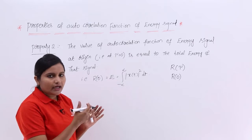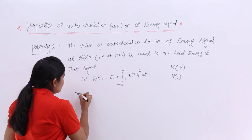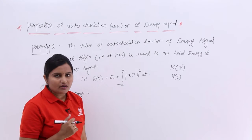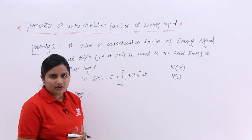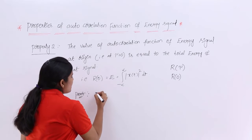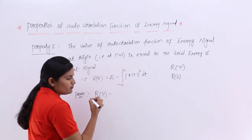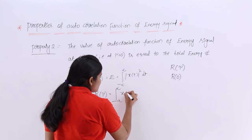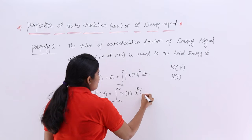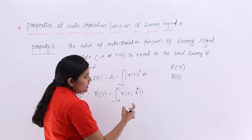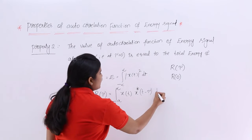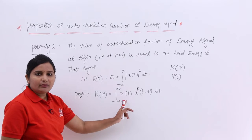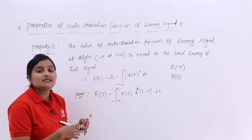I will now prove how the autocorrelation function at origin, that is at τ equal to 0, gives the total energy of the signal. Let me show that. I want to consider the autocorrelation function first. For that, I am having an equation: integral from minus infinity to infinity. Since this is an autocorrelation function, we need to consider a similar signal. If we consider a complex function, we need to consider the conjugate (star) for one function.